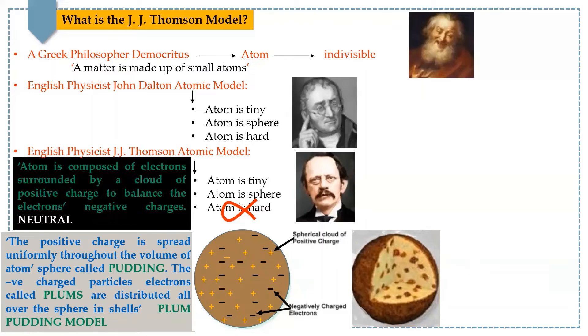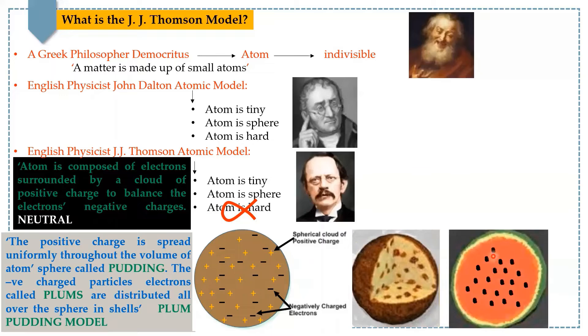You may compare this with the watermelon as well, where the seeds are distributed all over the red part of the watermelon. The seeds are distributed just like electrons are embedded in the sphere, and the red part can be like a cloud of the positive charge.